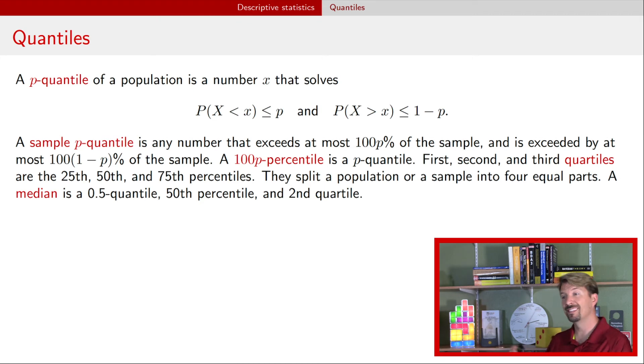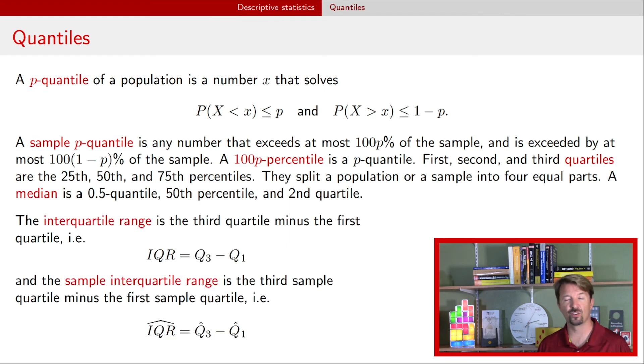Now, all of these sample quantiles estimate the corresponding population quantile. Another use of these sample quantiles and population quantiles are for something called the interquartile range. That's just the third quartile minus the first quartile. We can do that both for the population, and we can do it for the sample. And of course, the sample interquartile range is an estimate of that population interquartile range.